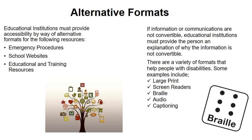Alternative Formats: Educational institutions must provide accessibility by way of alternative formats for the following resources: emergency procedures, school websites, and educational and training resources. If information or communications are not convertible, educational institutions must provide the person an explanation of why the information is not convertible. There are a variety of formats that help people with disabilities, including larger print, screen readers, braille, audio, and captioning.